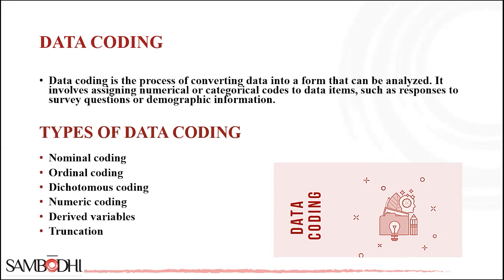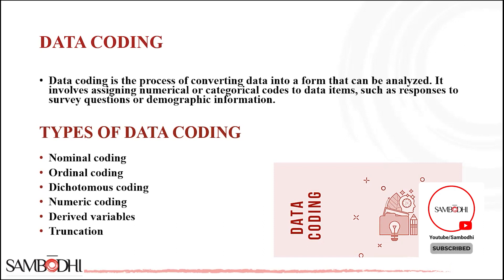Ordinal coding basically involves assigning categories of data items into a specific order. For example, responses to a survey question about satisfaction level might be coded as: very dissatisfied = 1, frustrated = 2, neutral = 3, satisfied = 4, and very satisfied = 5.